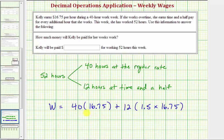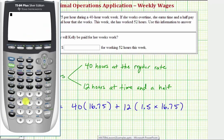Now let's go to the calculator to evaluate this. So we have 40 times 16.75 plus 12 times 1.5 times 16.75. Since this equals 971.5, she earned $971.50 this week.